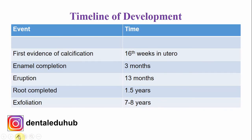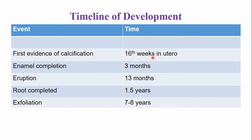The timeline of development of the mandibular deciduous lateral incisor: calcification begins at the 16th week in utero, the crown is completed by the age of 3 years, and the average eruption time is 13 months. The root is completed by 1 and a half years, exfoliation occurs by the age of 7 to 8 years, and this tooth is replaced by the permanent mandibular lateral incisor.